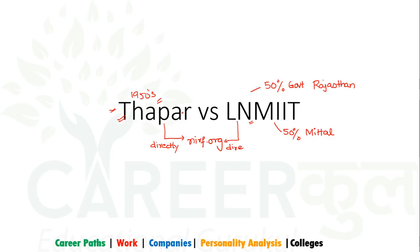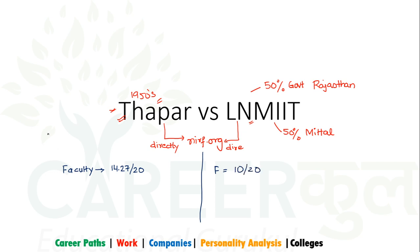Let us check the data, starting with Thapar. Looking at Thapar, the faculty score depends on size. They get 14.27 out of 20 for faculty. They get nearly 10 out of 20 for research. But again, size matters very much when comparing the number of faculties in LMNIT versus Thapar.